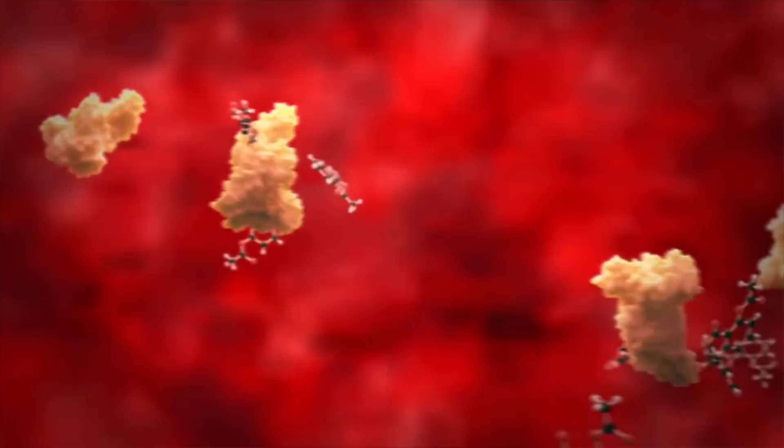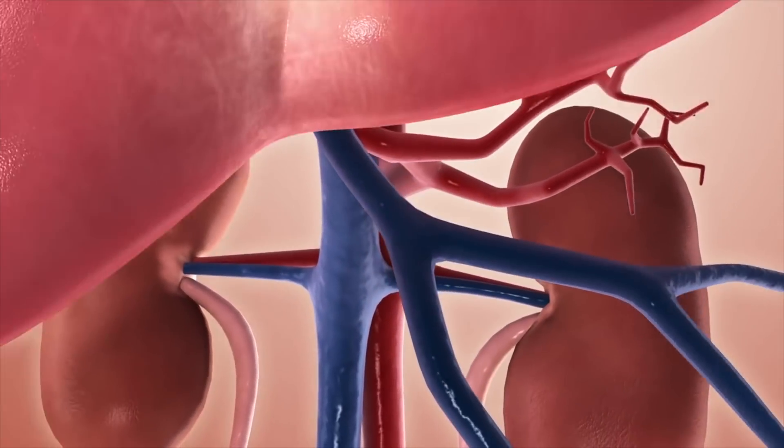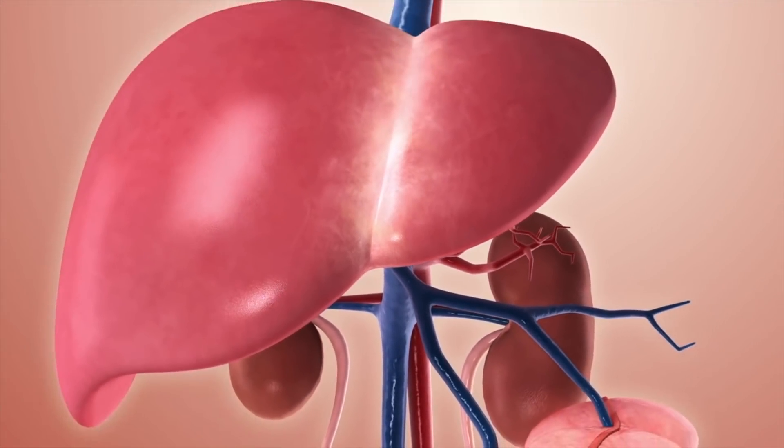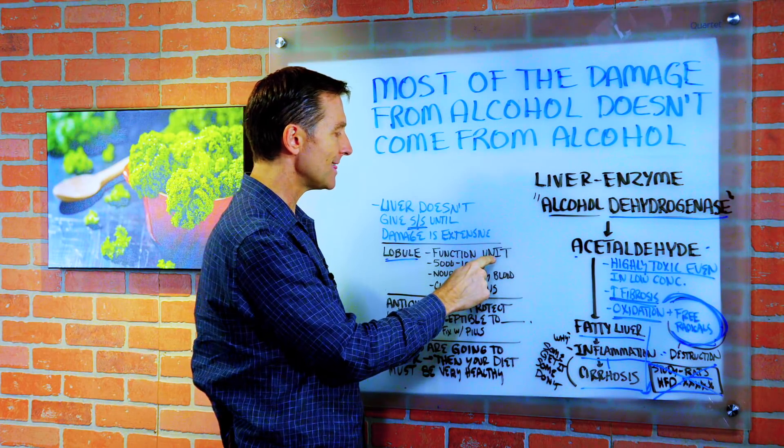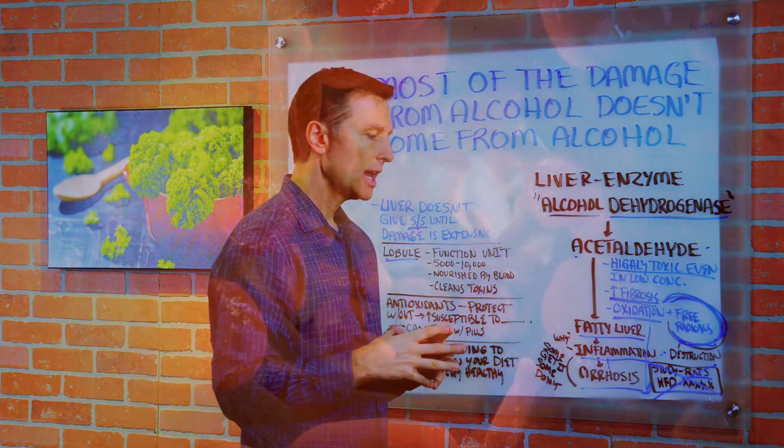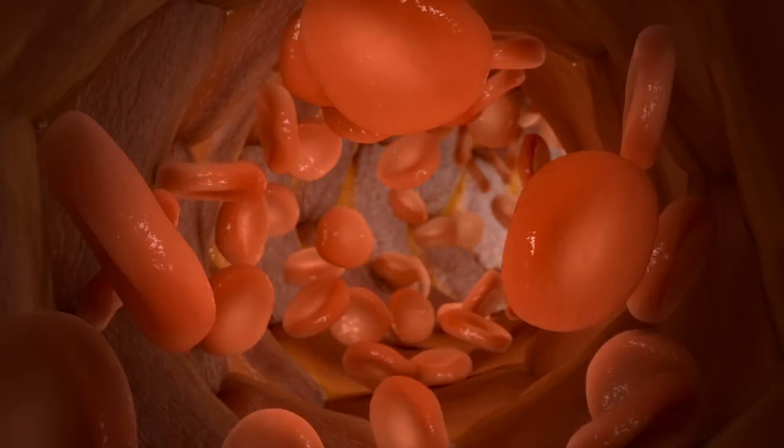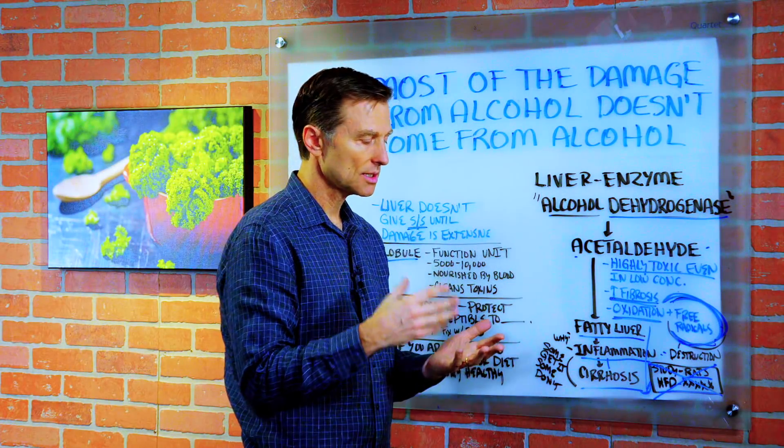So in the liver, you have these little functional units that detoxify. They do many things. They're called lobules. So you have anywhere between 5,000 and 10,000 of these units. And they're nourished by blood. And they do a lot of things from digestion to cleaning toxins.